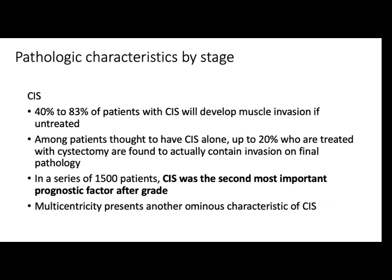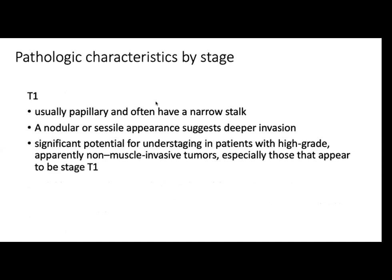For CIS, 40 to 83% with CIS will develop muscle invasion if left untreated. Among the 20% who undergo cystectomy, muscle invasion was already found. CIS is the second most important prognostic factor after grade. For T1, usually papillary and often have a narrow stalk. A nodular sessile appearance suggests deeper invasion and significant potential for understaging in patients with high-grade apparent non-invasive tumors, especially those at stage 1.